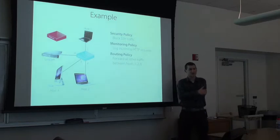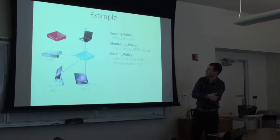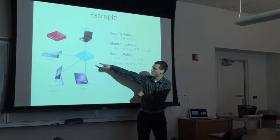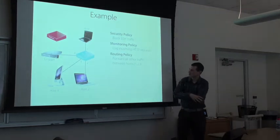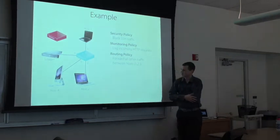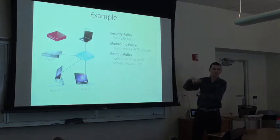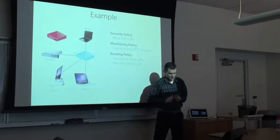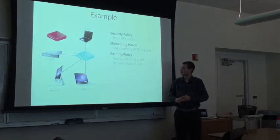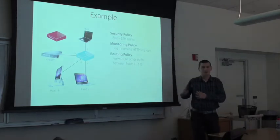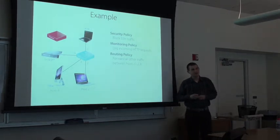Let me start with a very simple example. Here's my network: just one switch with four ports connected to three hosts — one, two, and four — and a monitor that's going to be a middlebox monitoring web traffic. The policy I want to implement consists of three high-level components: a security component to block all SSH traffic, a monitoring component to divert all web traffic to the middlebox for logging, and a routing policy to provide connectivity between the hosts. I'm going to show you that implementing this policy, even using SDN or OpenFlow, turns out to be a little complicated.